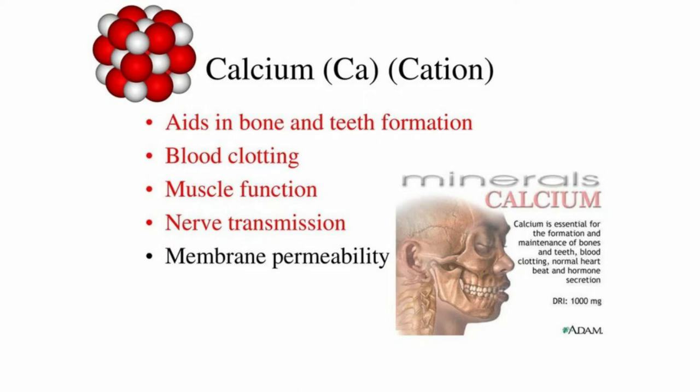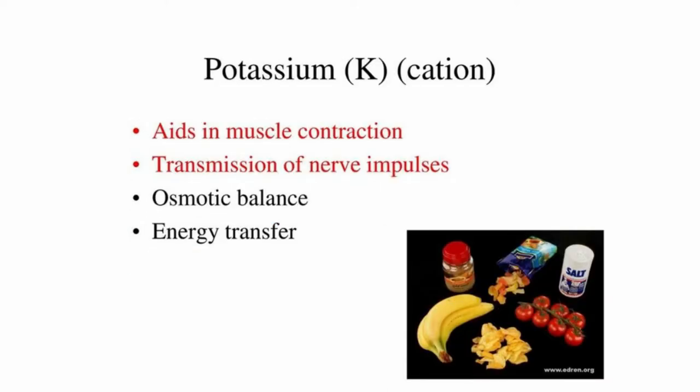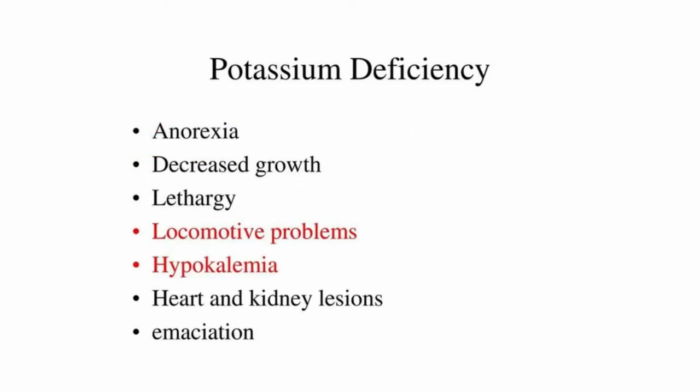Moving on to calcium salts — at the most basic level, we know that calcium is needed for bones and teeth formation, muscle function, and even for nerve transmission. A deficiency of any of these salts can lead to fractures and rickets.